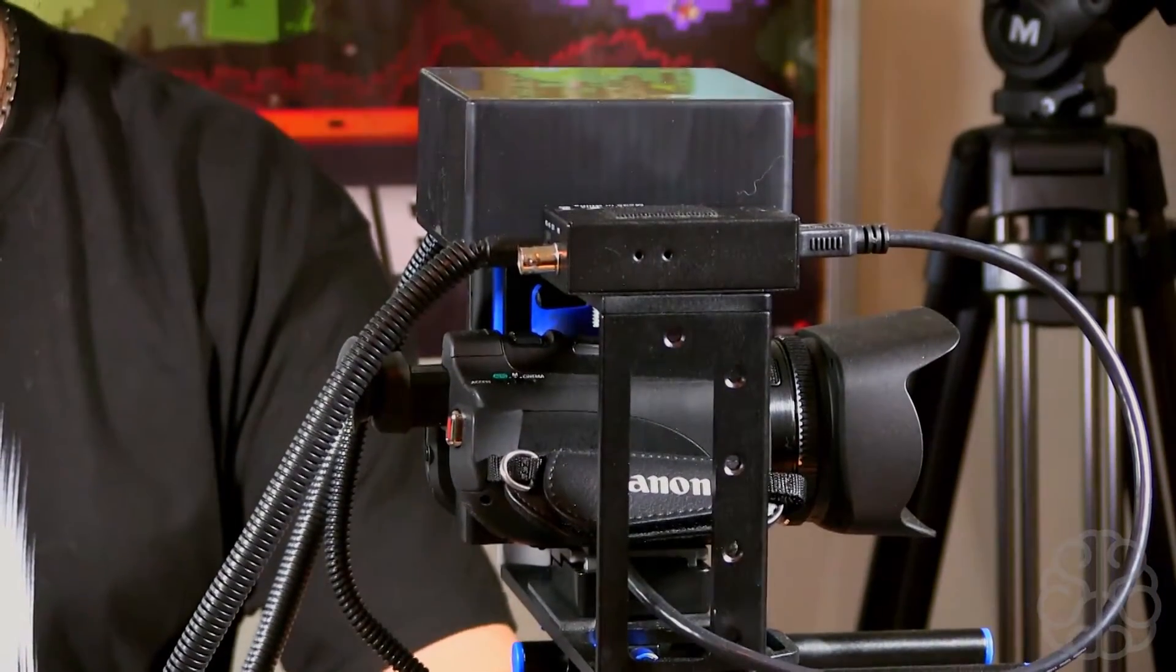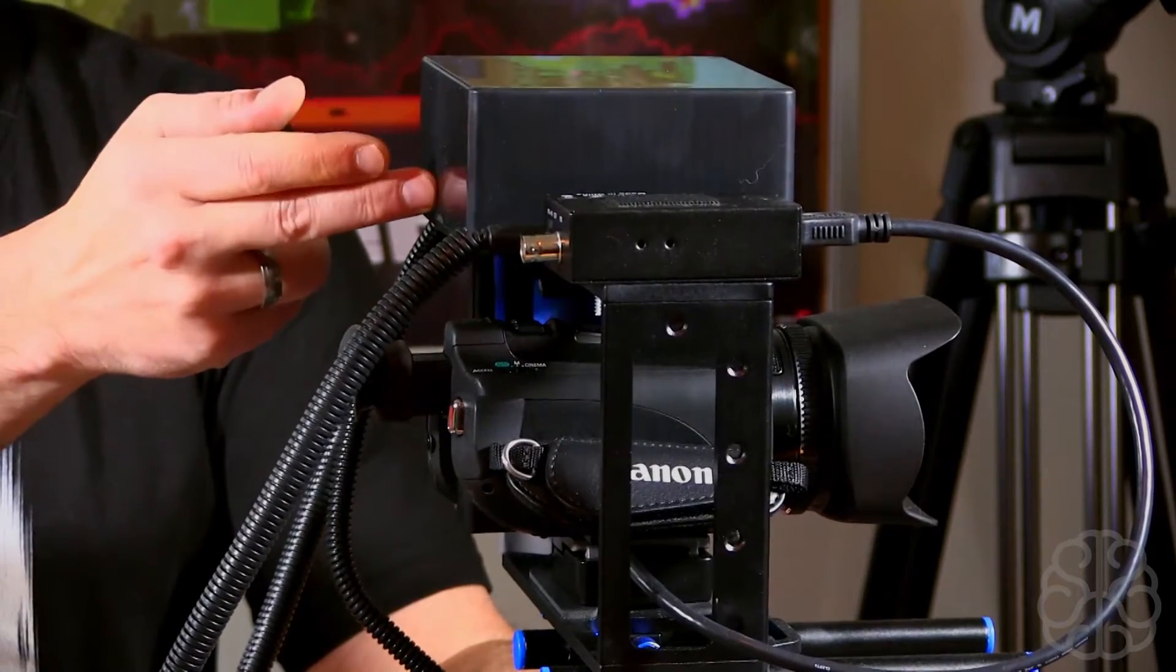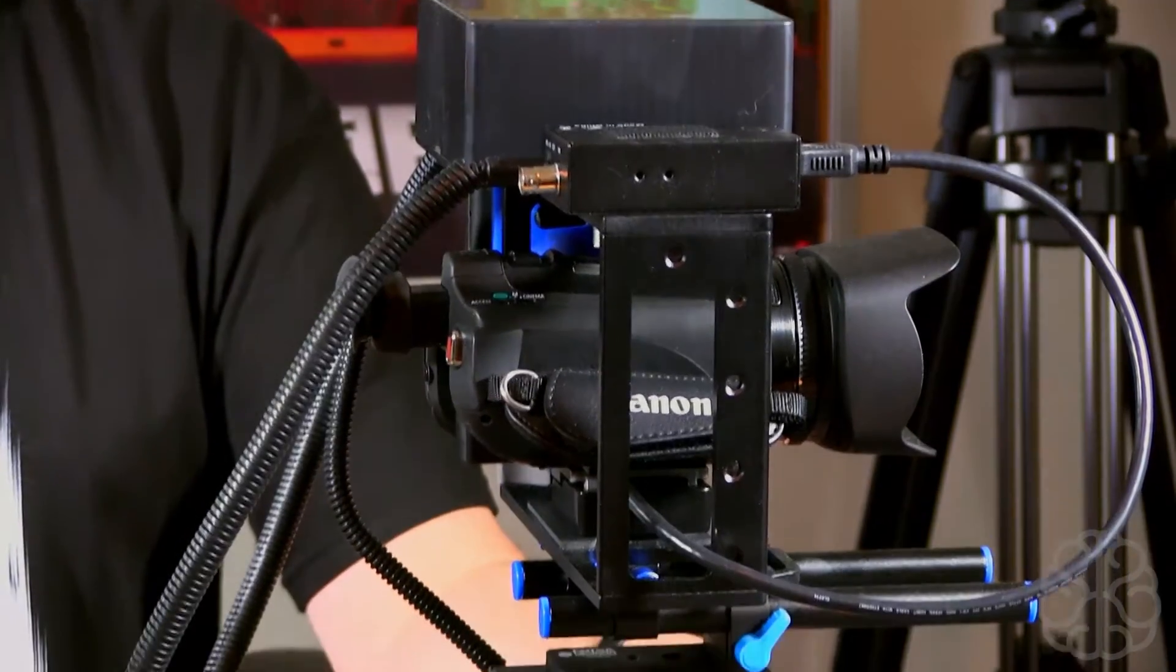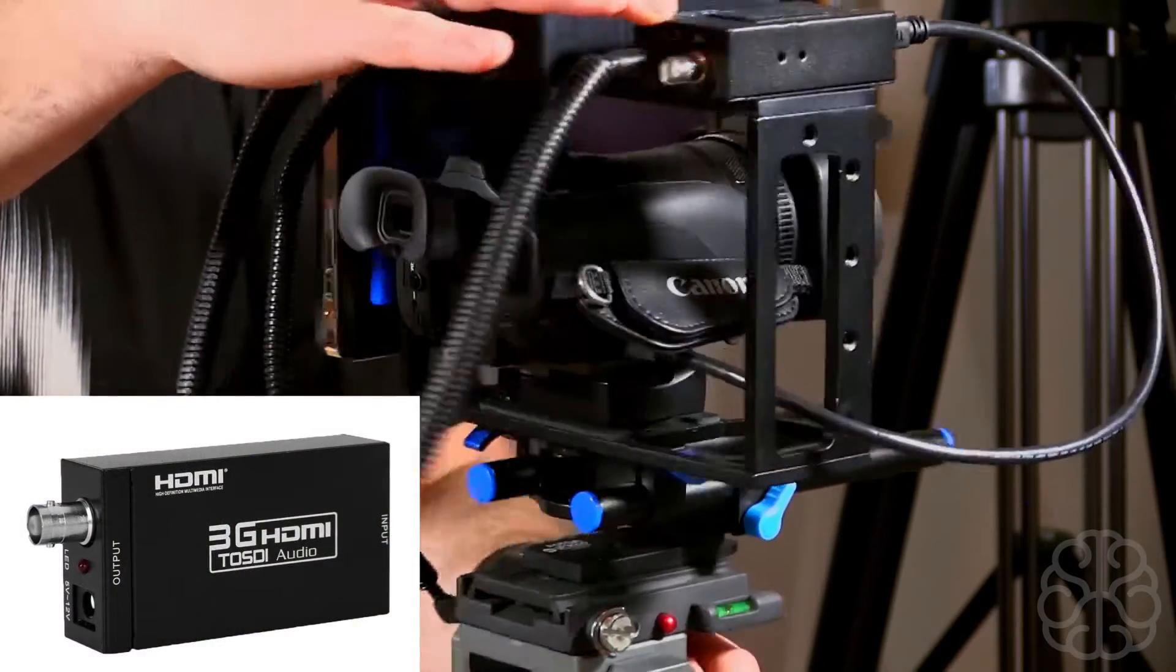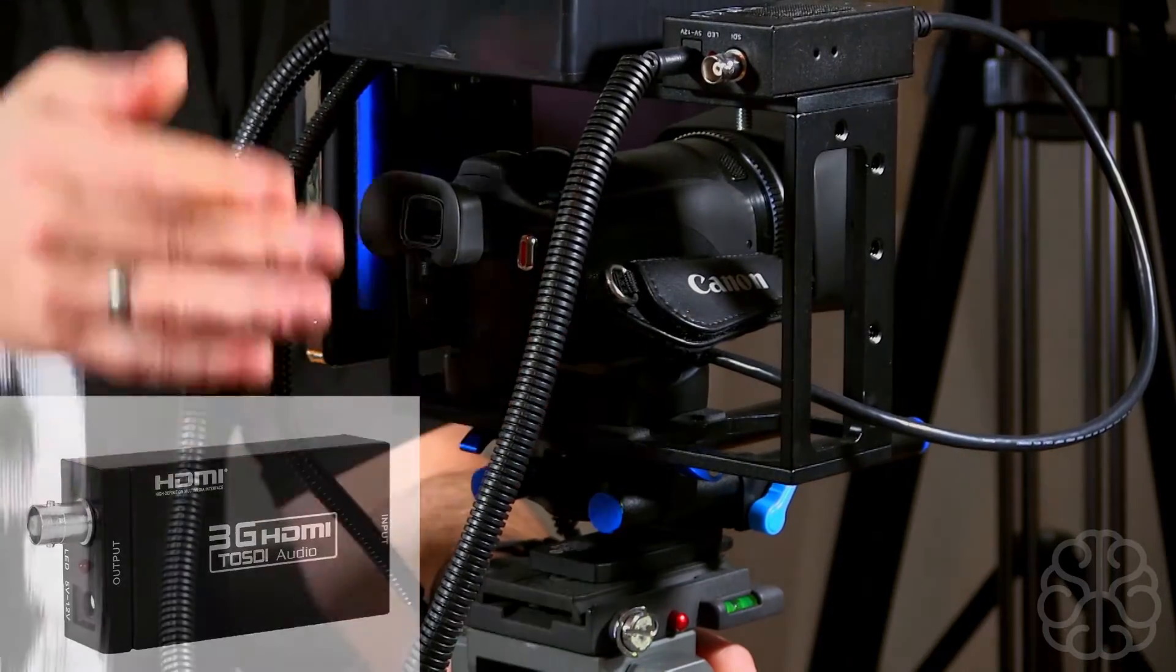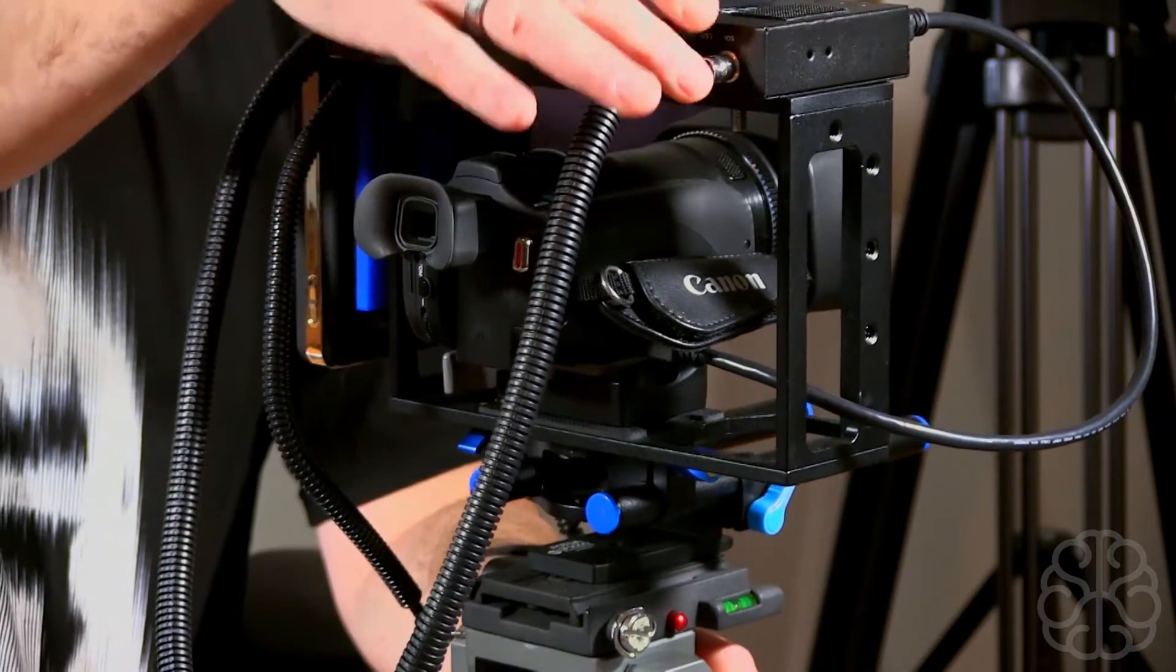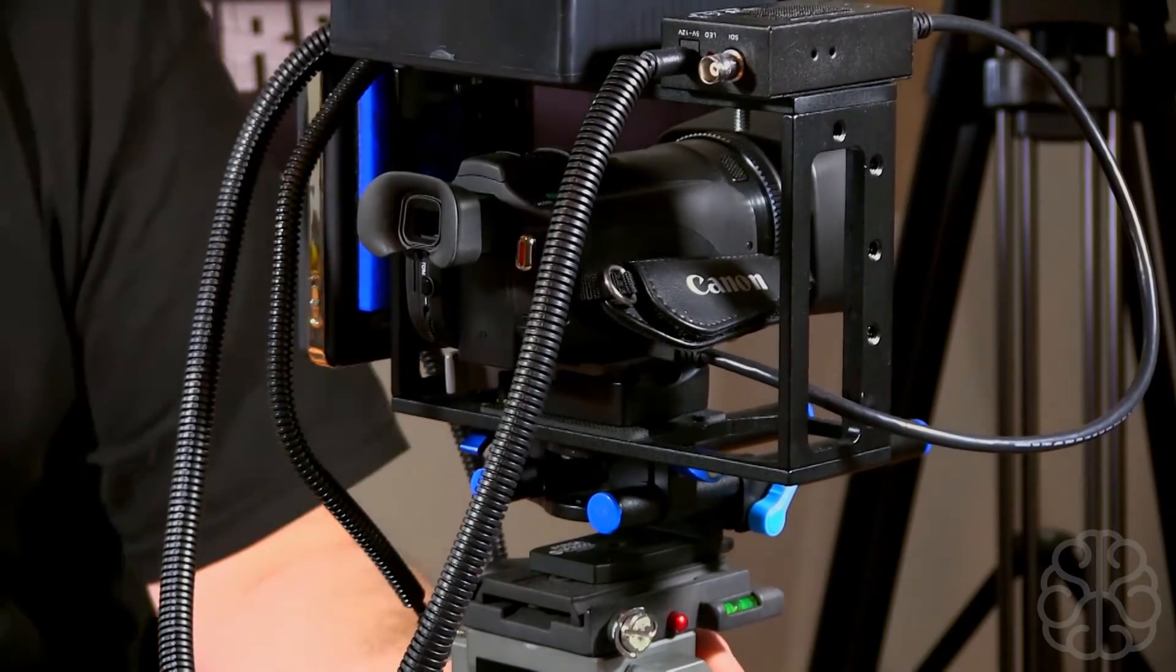This is the little enclosure that has the nano inside. If we pan down a little bit, this guy is an HDMI to SDI converter. The SDI cable comes out of the camera, goes into this converter here, and then we're connecting an SDI cable.